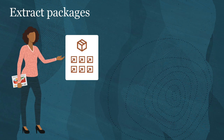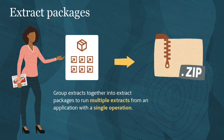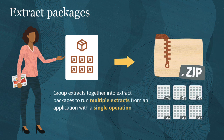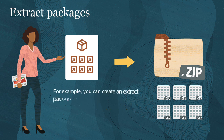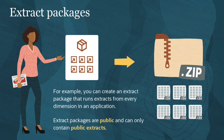Unlike exports which can only be run one at a time, you can group extracts together into extract packages to run multiple extracts from an application with a single operation. When you run the extract package, each extract in the package is run and the results are added to a single zip file. For example, you can create an extract package that runs extracts from every dimension in an application, collecting them into a single zip file. Extract packages are public and can only contain public extracts.